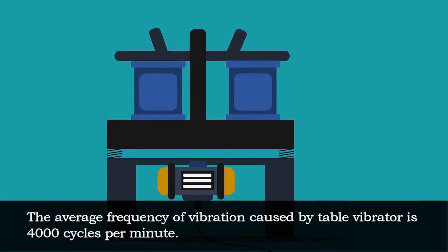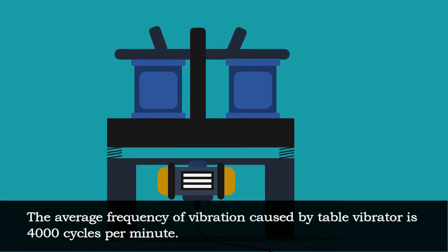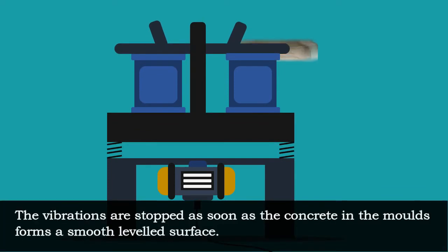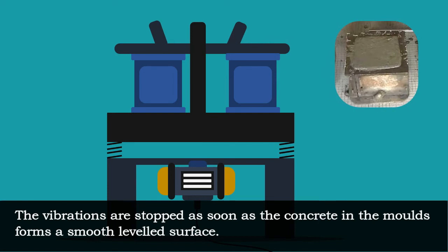The average frequency of vibration caused by table vibrator is 4000 cycles per minute. The vibrations are stopped as soon as the concrete in the molds forms a smooth leveled surface.